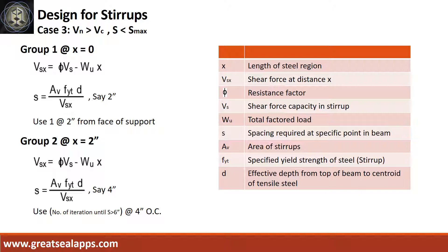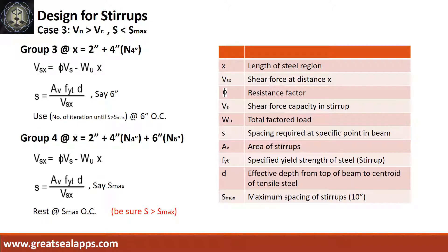For Group 1, use 2 inches as the initial spacing away from the face of the support. For Group 2, iterate the web strength procedure until the spacing of stirrups is greater than or equal to 6 inches, and use that number of iterations for 4-inch spacing. For Group 3, continue to check for web strength until the spacing of stirrups is greater than or equal to maximum stirrup spacing, and use that number of iterations for 6-inch spacing. For Group 4, as a final check, ensure that the spacing of stirrups is greater than or equal to maximum stirrup spacing and designate that as rest at maximum spacing.